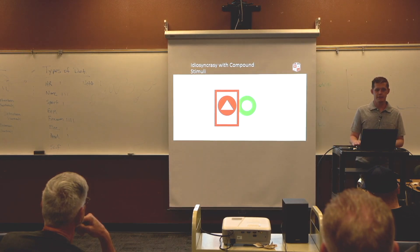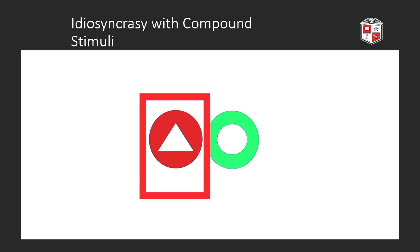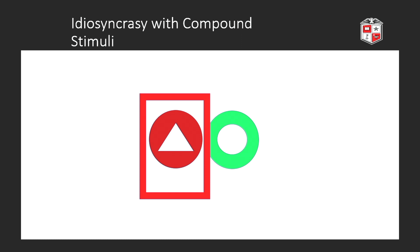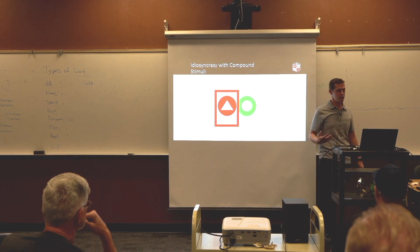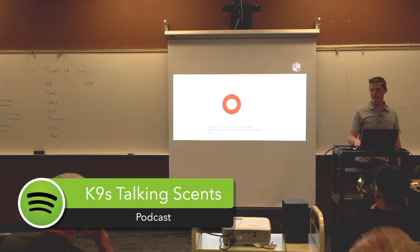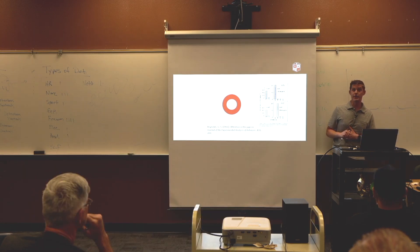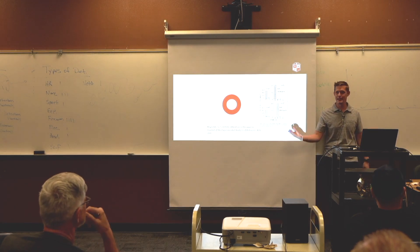I'm going to show you a stimulus. Raise your hand if it's a correct stimulus. Nobody? Is it correct? Is it incorrect? Do you see the conflict? There's a conflict here. Do you pay attention to the red? Do you respond to red? Or do you respond to the triangle or circle? If you were a group of pigeons, you'd be split — half of you would say it's a target, half of you would say it's a non-target.